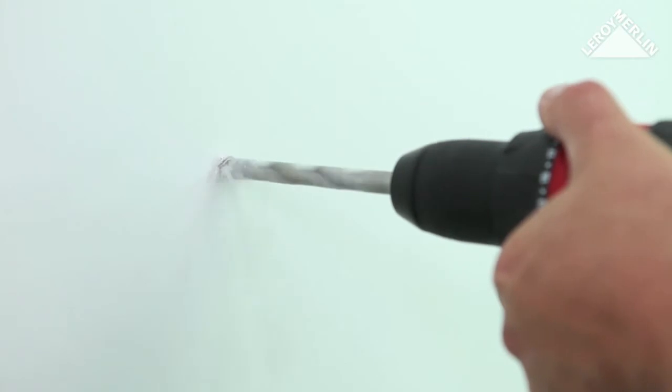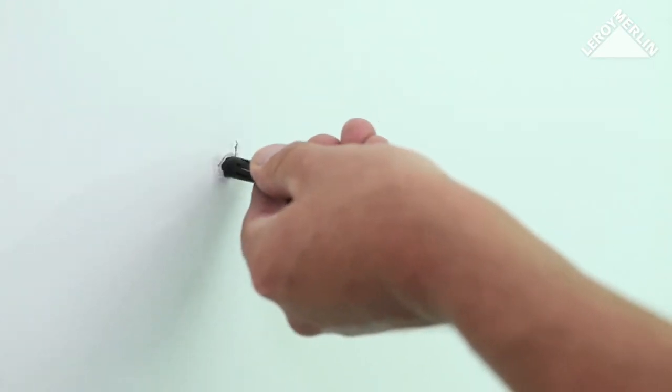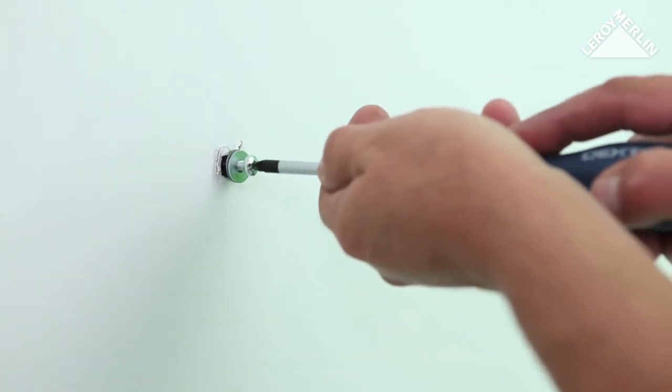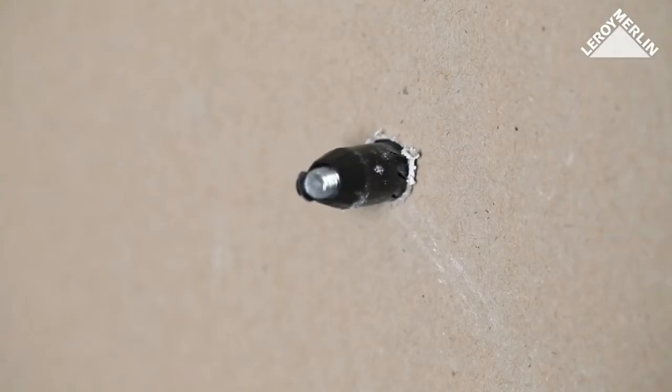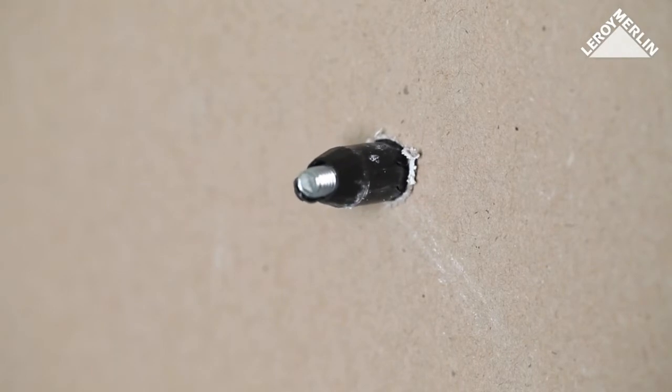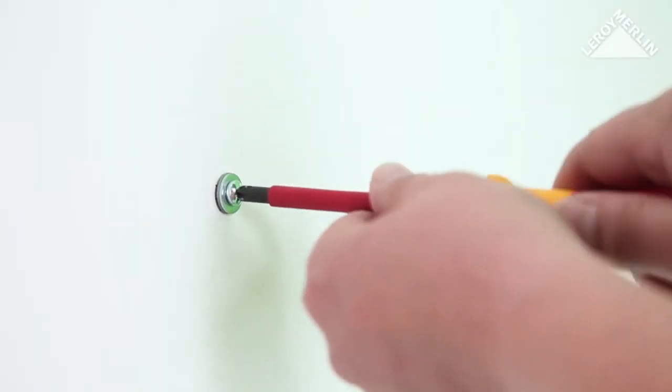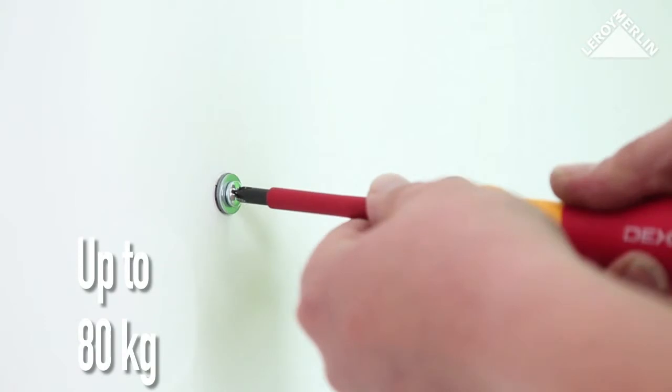These plugs can support a heavy load on a solid or hollow wall. Drill and then insert the plug. Screwing makes the body of the plug retract, creating a bulge behind the plaster to lock the plug in place. This anchor system will support 80 kg of vertical load.